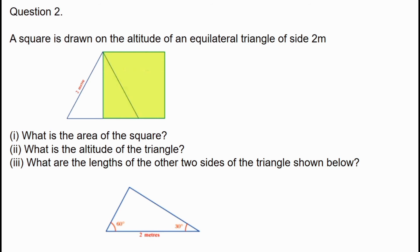A square is drawn on the altitude of an equilateral triangle of side 2 meters. The questions are: what is the edge of the square, what is the altitude of the triangle, and what are the lengths of the other two sides of the triangle shown below? We have an equilateral triangle with side length 2 meters, and the height of the triangle is drawn on the square.